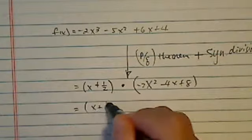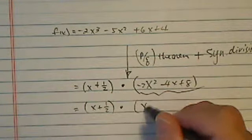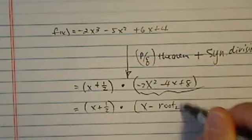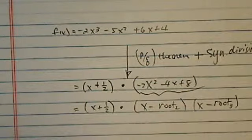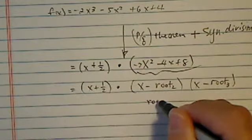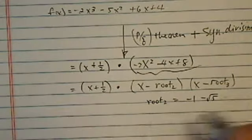And then using the quadratic formula, you'll have x minus another root two, x minus another root three, where the root three, two, is equal to minus one minus radical five.